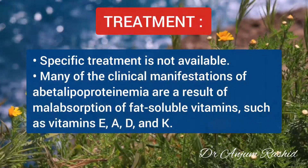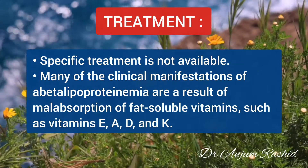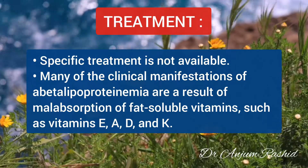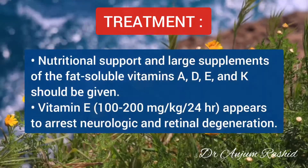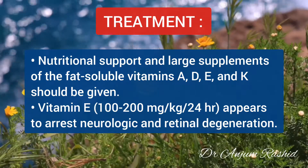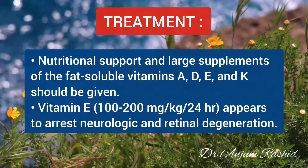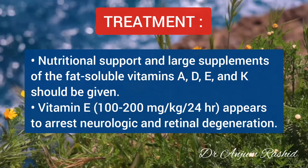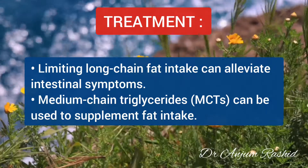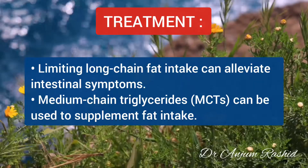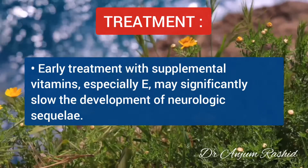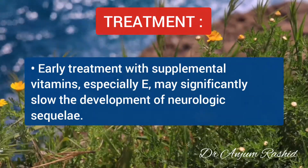Now the treatment. Specific treatment of Abetalipoproteinemia is not available. Many of the clinical manifestations are a result of malabsorption of fat-soluble vitamins such as vitamin E, A, D, and K. Nutritional support and large supplements of fat-soluble vitamins A, D, E, and K should be given. Vitamin E, in a dose of 100–200 mg per kg per 24 hours, appears to arrest the neurological and retinal degeneration. Limiting long-chain fat intake can alleviate the intestinal symptoms, and medium-chain triglycerides can be used to supplement fat intake. Early treatment with supplemental vitamins, especially vitamin E, may significantly slow the development of neurological symptoms.